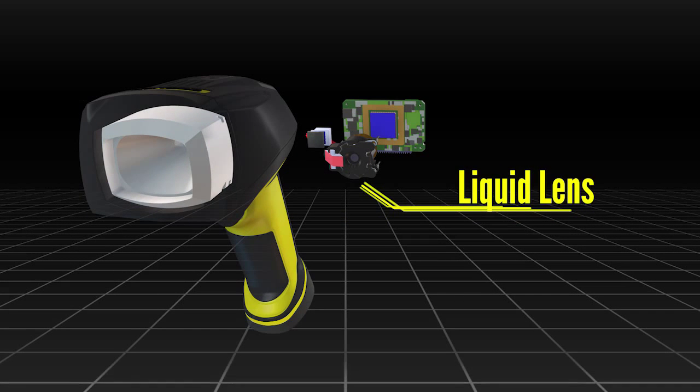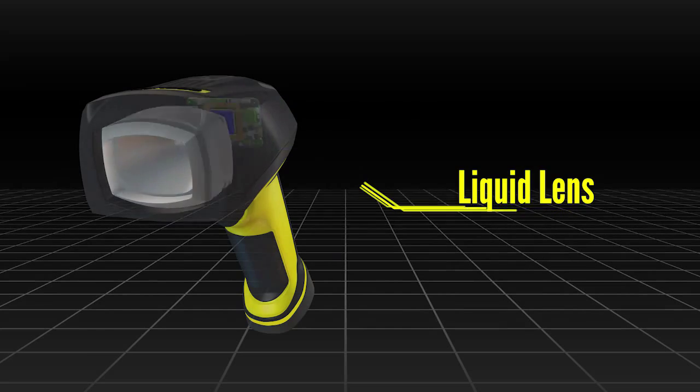Additionally, we also have liquid lens technology, and that allows us to focus the reader close to the codes and also to read far away, like labels or work orders.